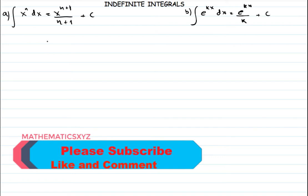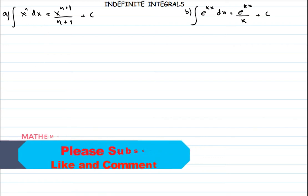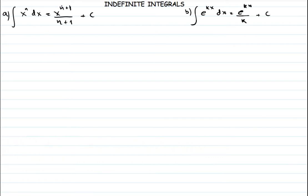First case: the rule says that we have to take the power, add 1, then divide by that new power plus 1. Now, imagine that you are given a function — say f(x) is equal to 3x squared plus 2.